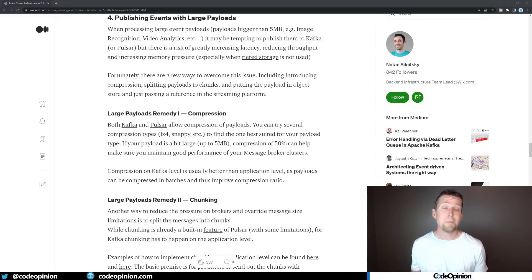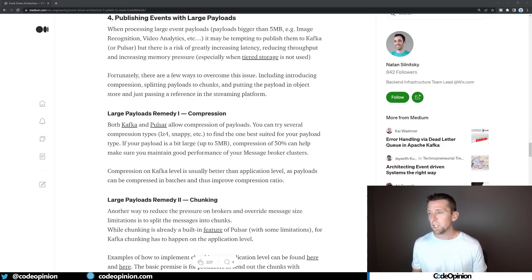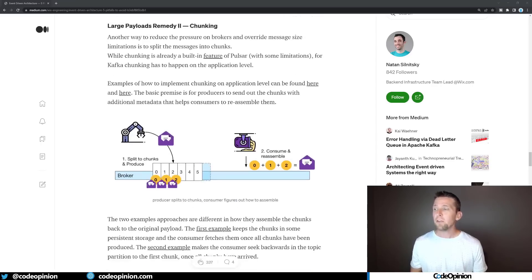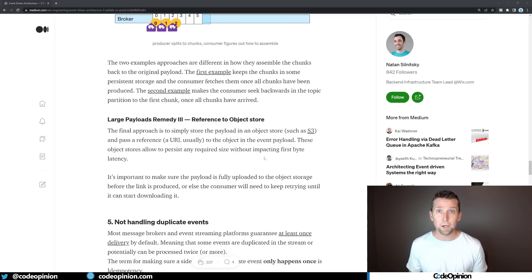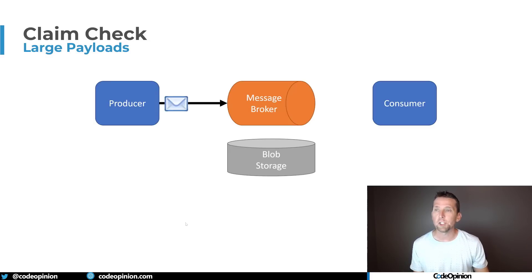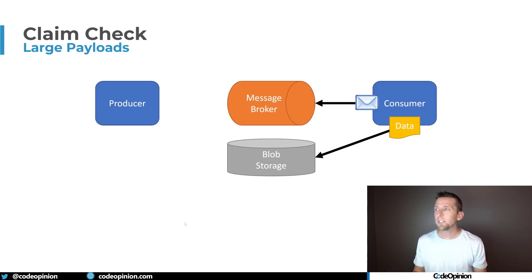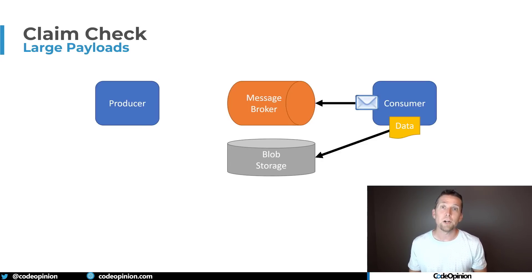The fourth pitfall is large messages — you have a large payload and don't necessarily want to put it in the event. Their two remedies are compression in Kafka, and chunking or splitting messages. But there's a third alternative they also mention: referencing an object store. This is actually called the claim check pattern — you send that large data to blob storage and put a reference in the message, so the consumer knows where to fetch the actual data.